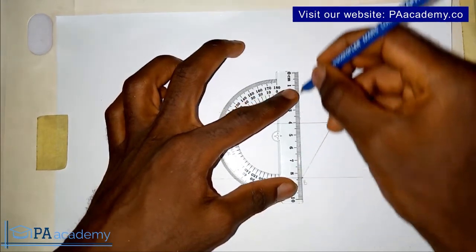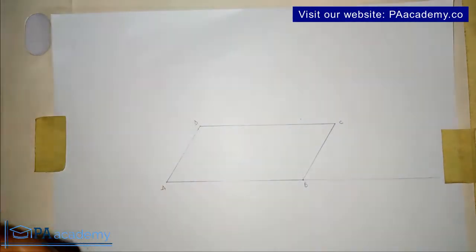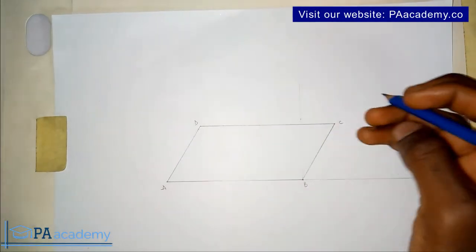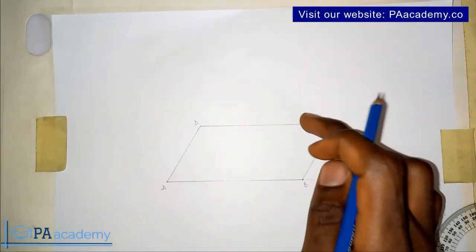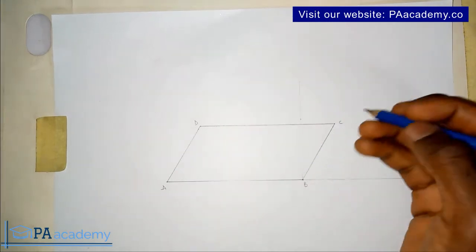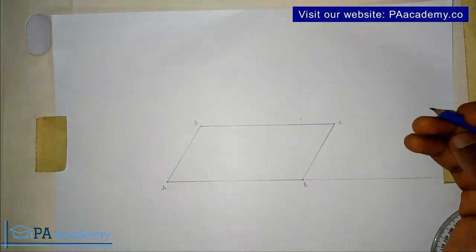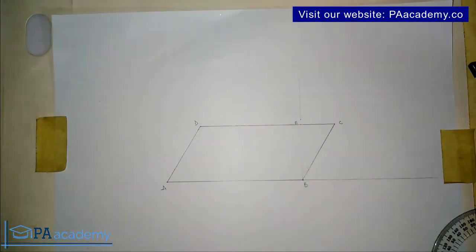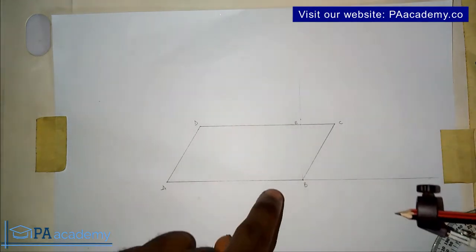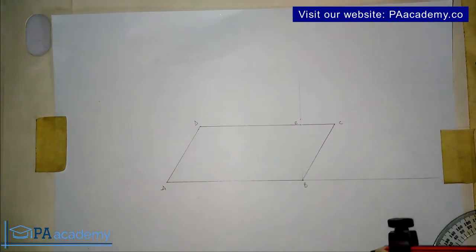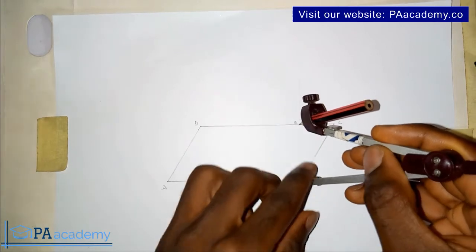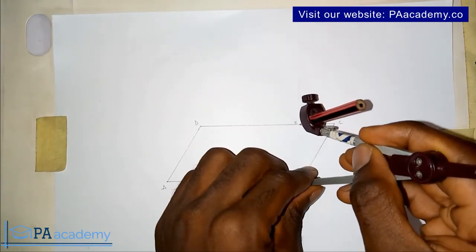Draw a line up. The next thing is to introduce our compass. Note that this perpendicular line is touching line DC — it's touching it at a point, so let's call that point E.